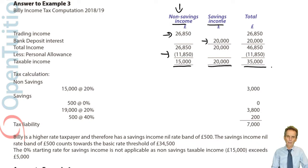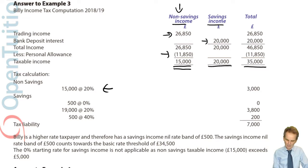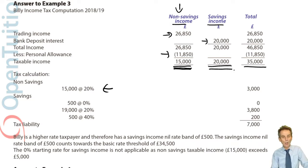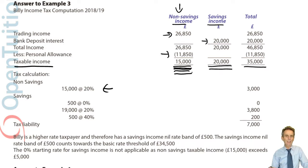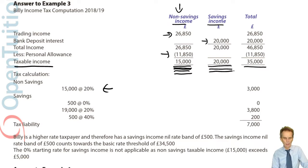Stop and think about your savings income and applicable tax rates. All non-savings income falls within the basic rate band, taxed at 20%. But £15,000 exceeds £5,000, which means there is no 0% starting rate band available for the £20,000 of taxable savings income. The starting rate band only applies if the savings income falls within the first £5,000 of total taxable income — which is definitely not the case here.